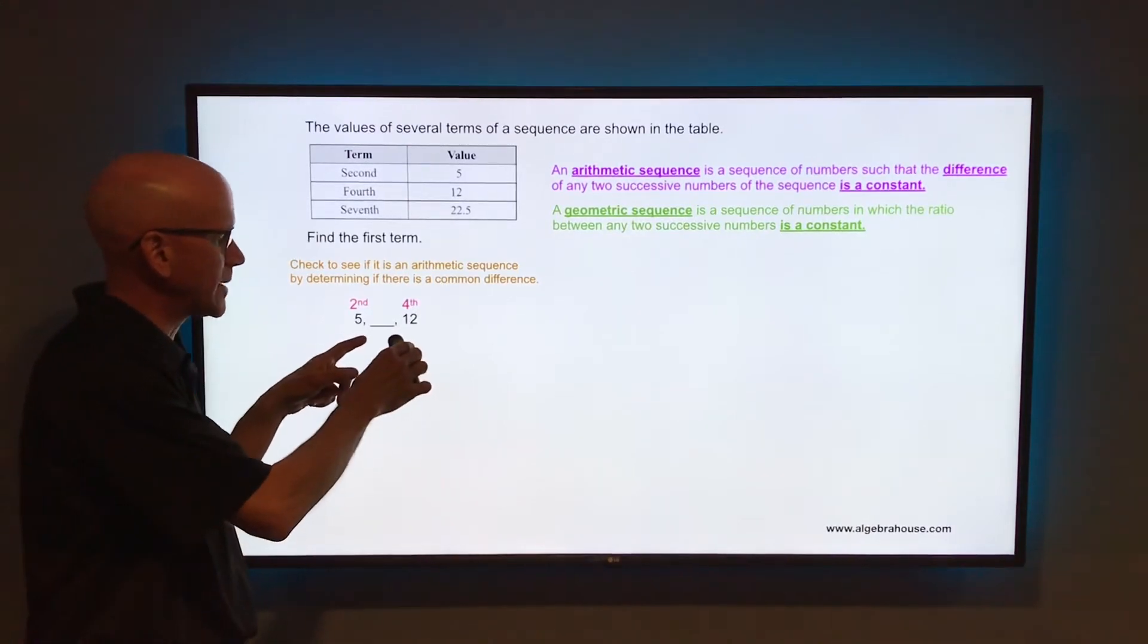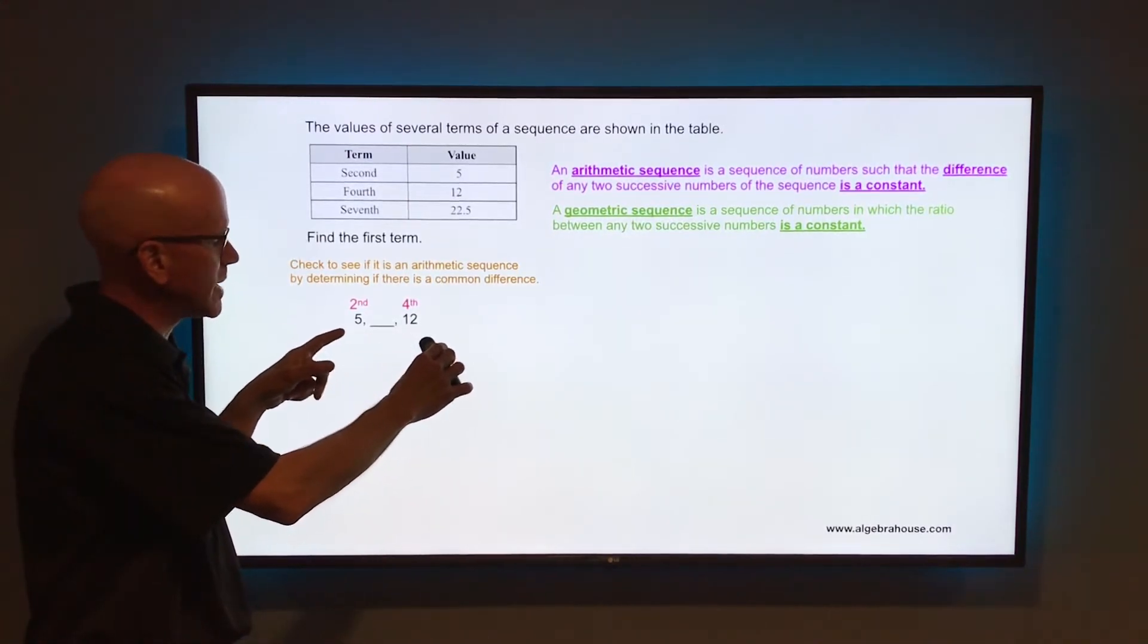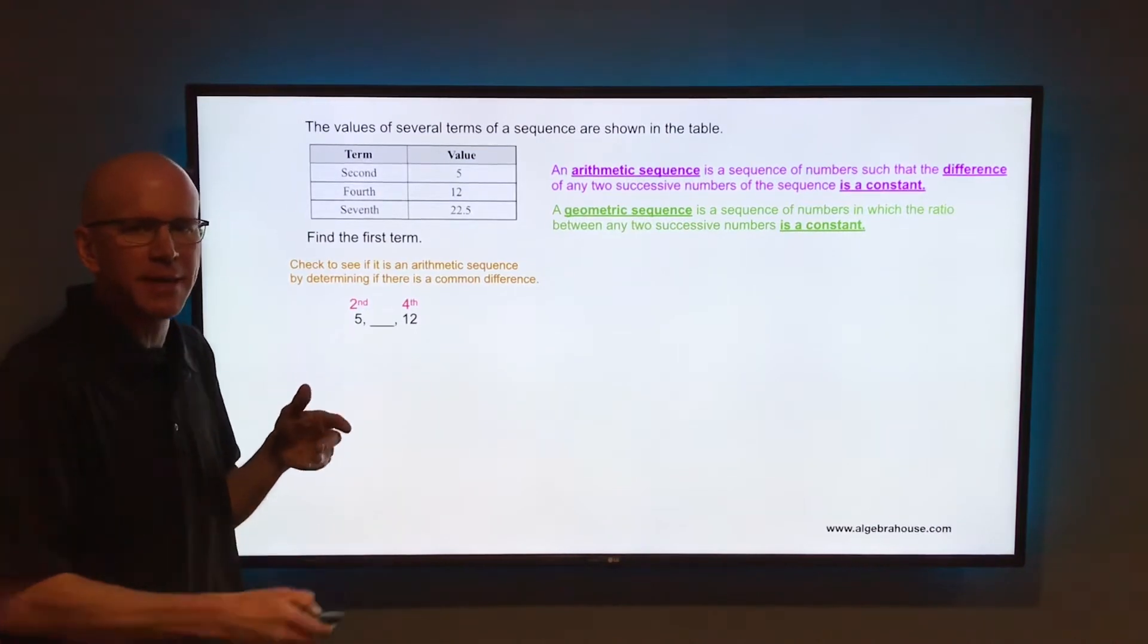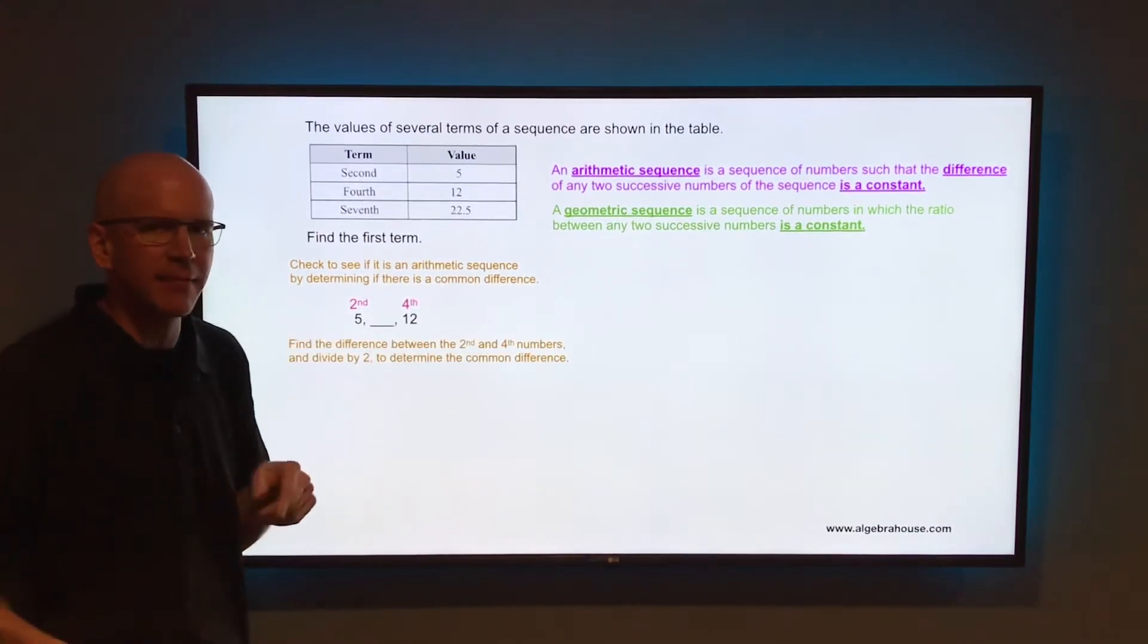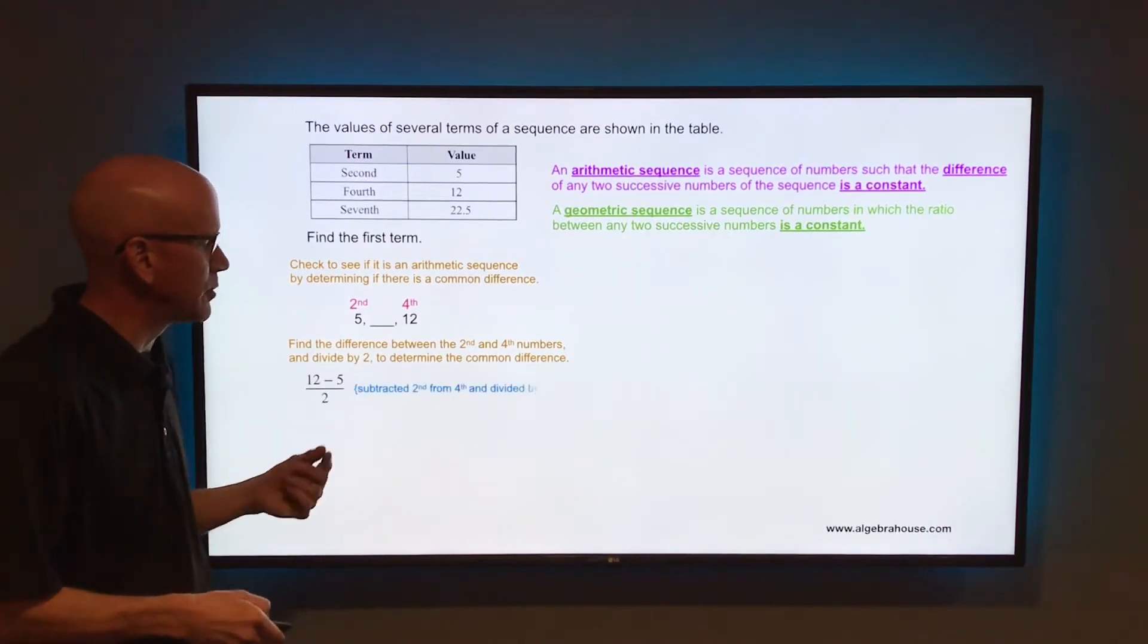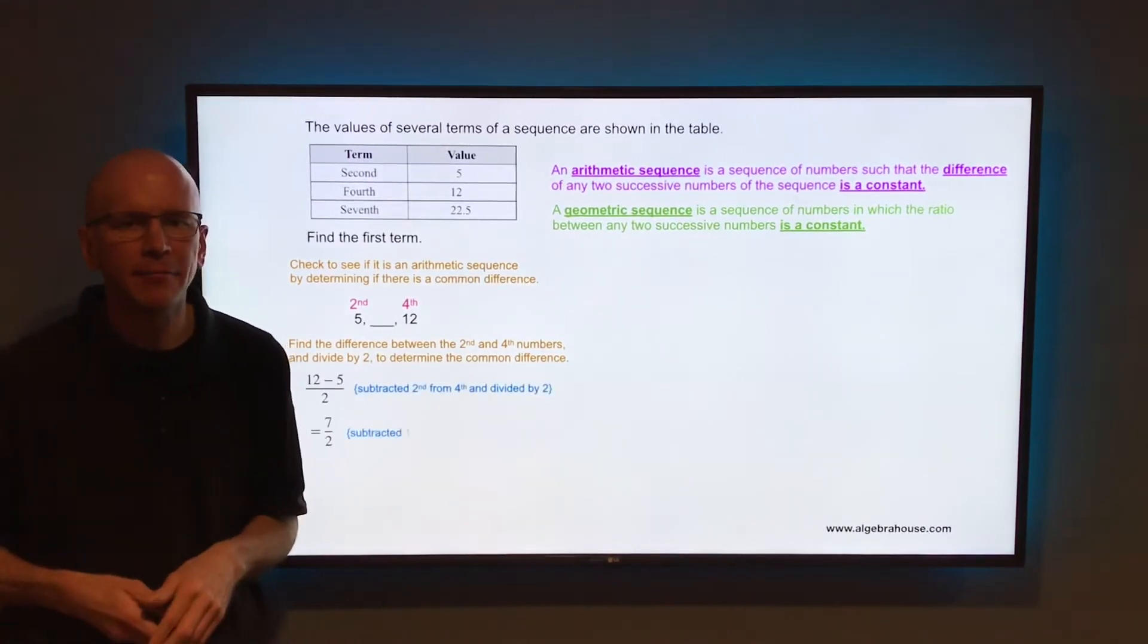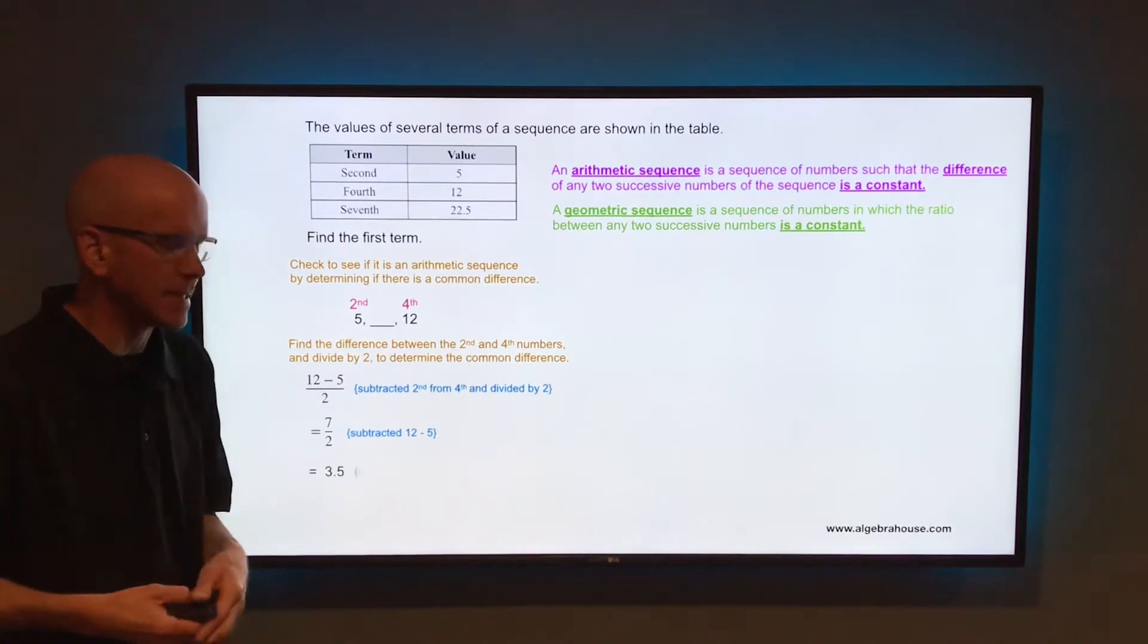So to find out what that common difference is, we're going to take that span from 5 to 12, it's going to be 7, and divide that by 2. So just take 12 minus 5, that is 7. If you divide that by 2, that's going to give you that common difference. So 7 divided by 2, that is 3.5.